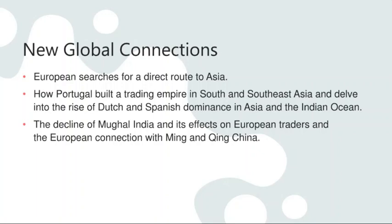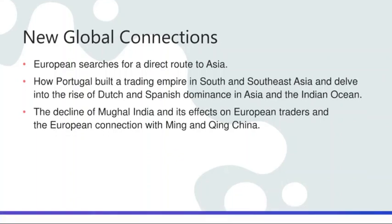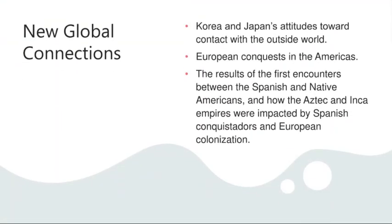We will discuss their different reception to European influence, and compare and contrast their reception to Europeans and their ideas of the Renaissance as well. In the final part of the week, continuing on with new global connections, we will talk about Korea and Japan's attitudes towards contact with the outside world. Korea and Japan had conflict amongst each other and they chose isolation when it came to dealing with the West, so we will discuss the economic, political, and social impacts of that.